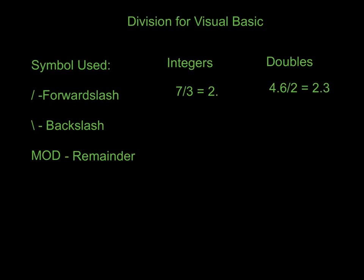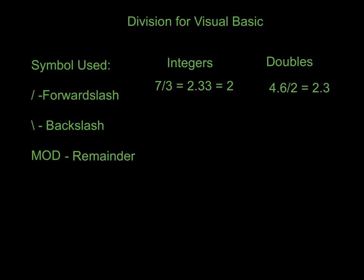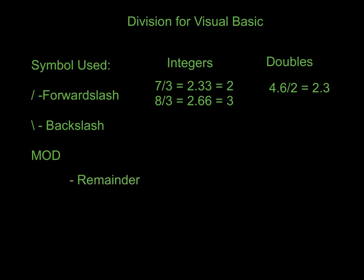Because in reality it's 2.33, which rounds down to 2. But if I change that to 8 divided by 3, the true answer is 2.66, and because I'm using the forward slash, it's going to round up to 3. So we want to be careful with that, because we don't always want our integers to round up like that.